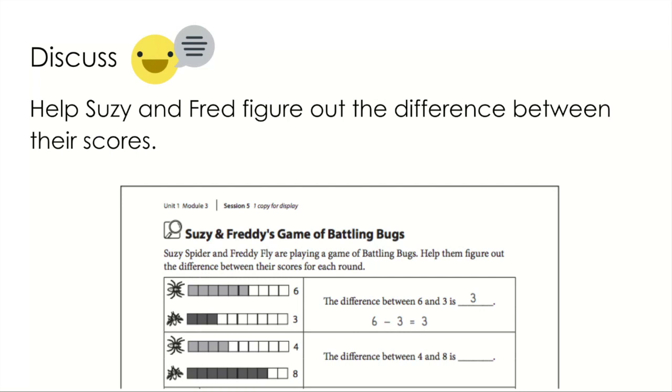Help Suzy and Fred figure out the difference between their scores. Suzy has six and Freddie has three. The difference between six and three is three. Six minus three is three. You can use your rekenrek to help you solve the problems. Let's try another one.